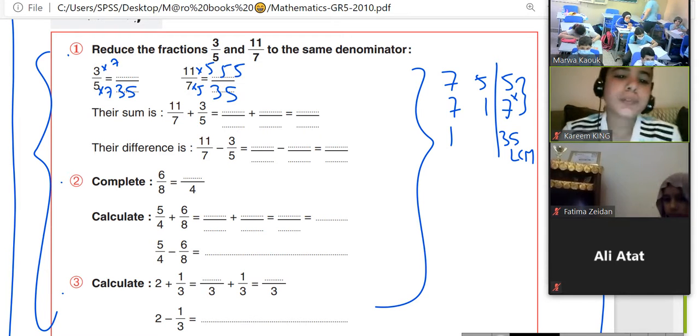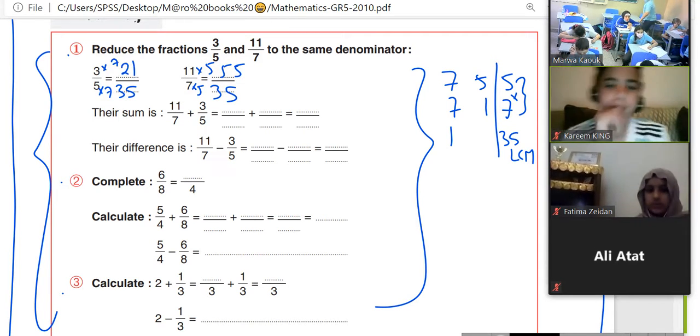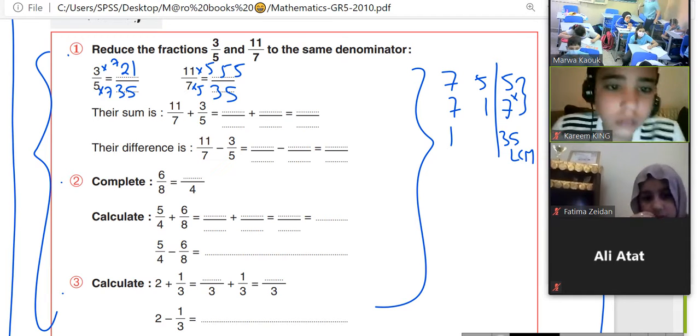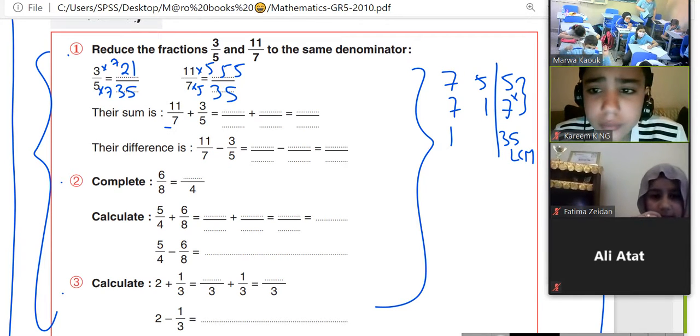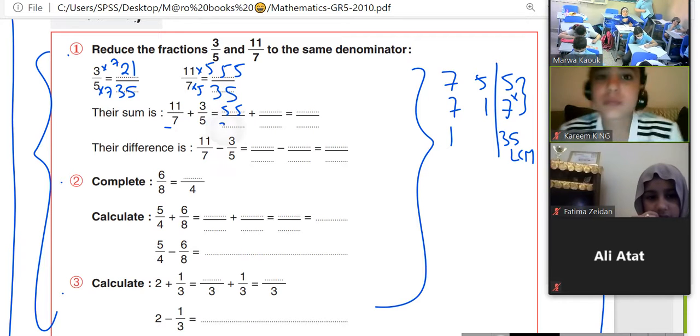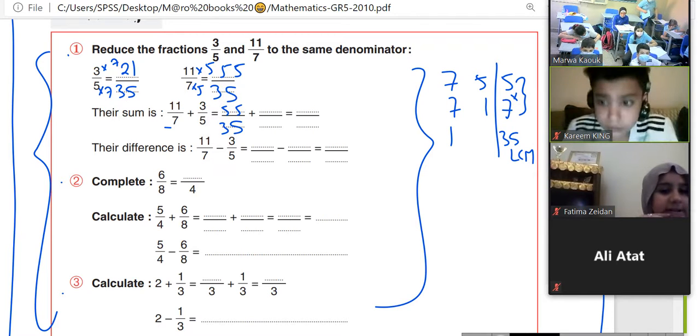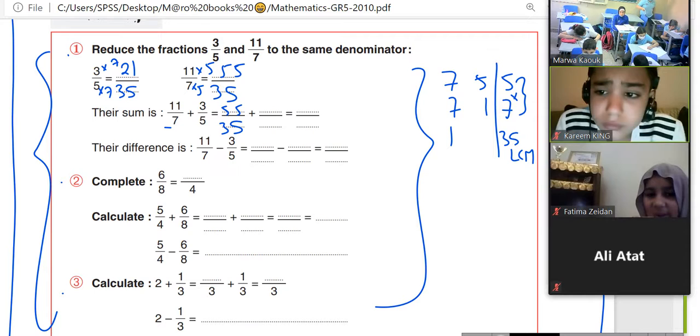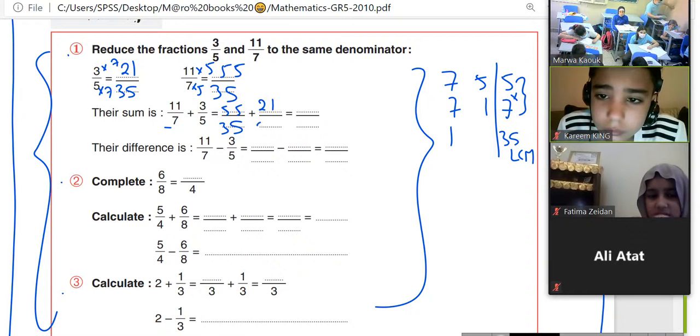55 and 21. It will be, instead of 11 over 7, we put 55 over 35. And 3 over 5, 21 over 35.